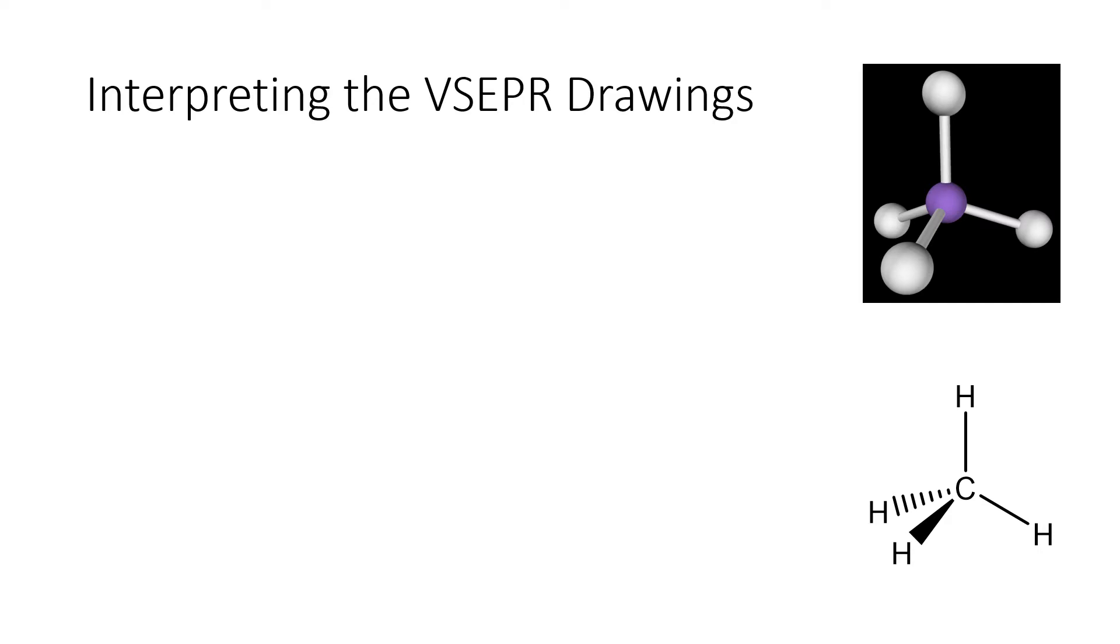You see a C for the carbon atom in the middle and then the Hs for the four hydrogen atoms, and we've got three different types of lines and each type of line has a different meaning behind it.